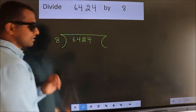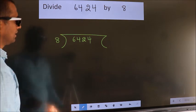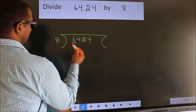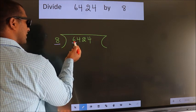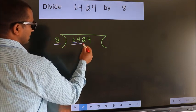This is your step 1. Next, here we have 6, here 8. 6 smaller than 8. So, we should take 2 numbers, 64.